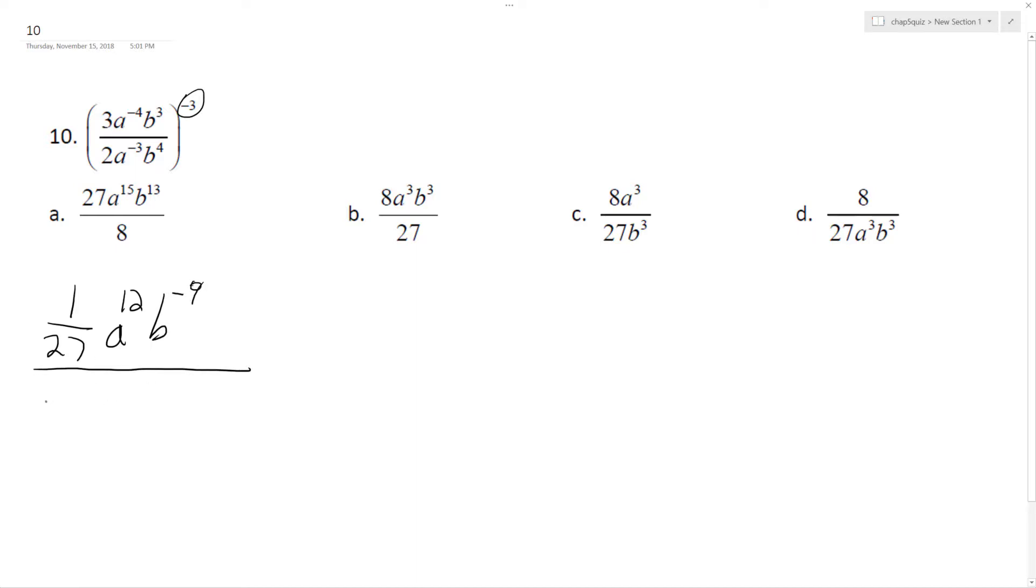And then down here, we get 2 raised, well, 2 raised to the negative 3rd, which is the same thing as 1 over 8, times A raised to the 9th, and then B raised to the negative 12th.